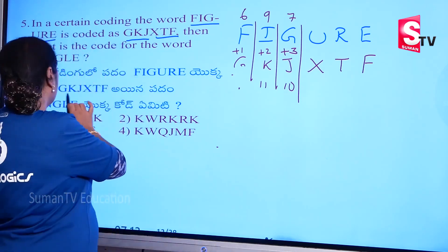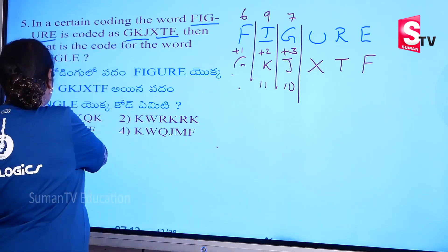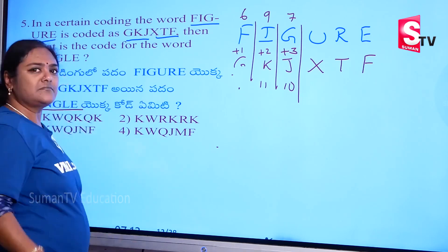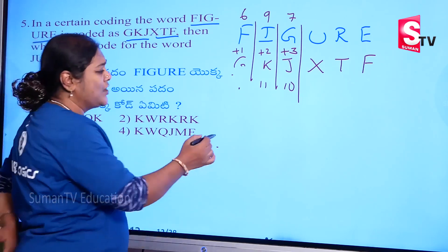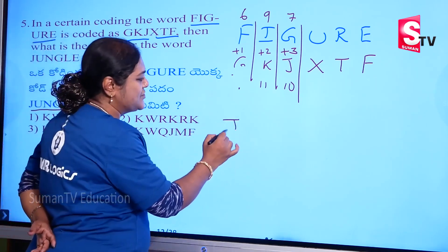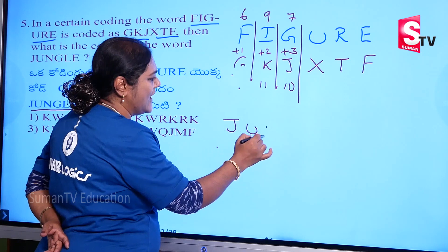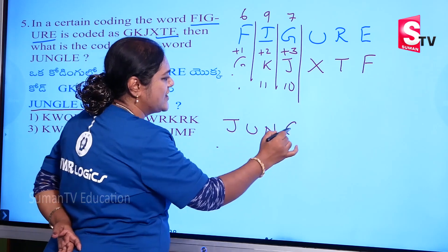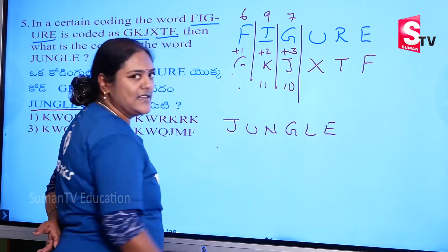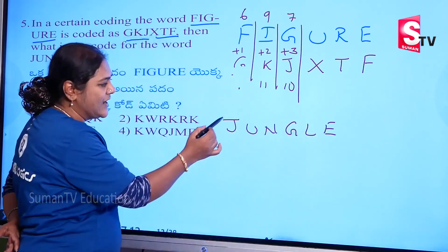So, let's work this out. The word 'JUNGLE' is there, right? Let's encode it. G, U, N, G, L, E — let's encode JUNGLE.